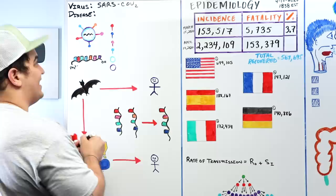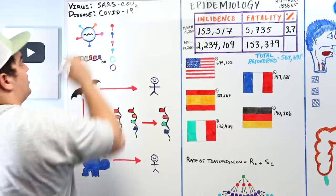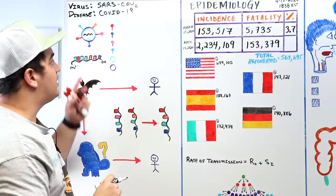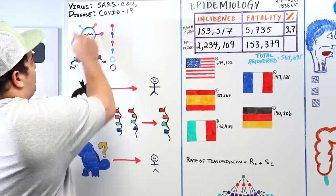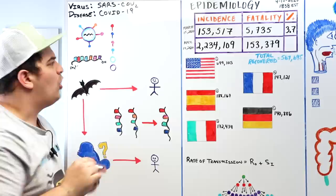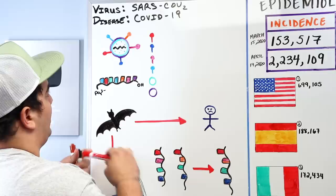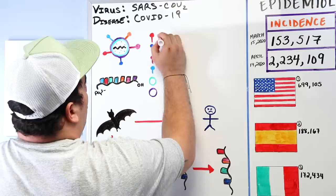SARS-CoV-2 is responsible for causing the disease COVID-19. Looking at the viral structure, there are specific protein components on the outer surface. The most important one, most relevant to the pathophysiology, is called the spike protein.